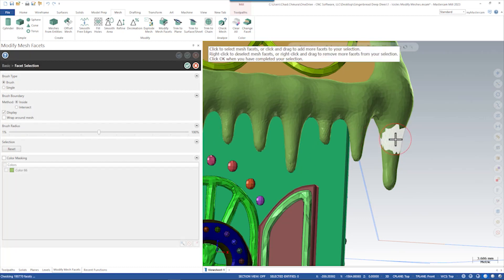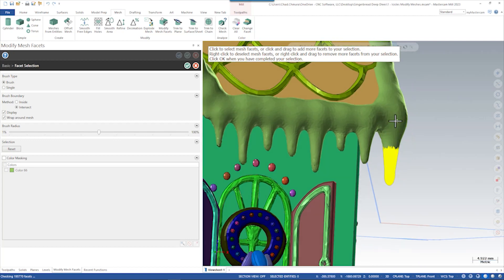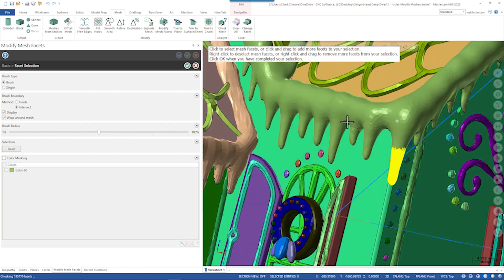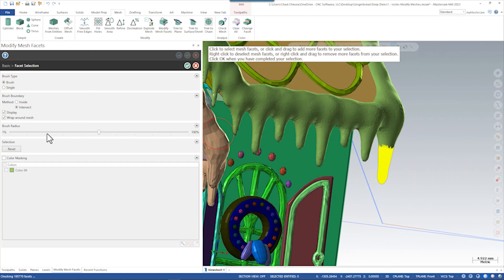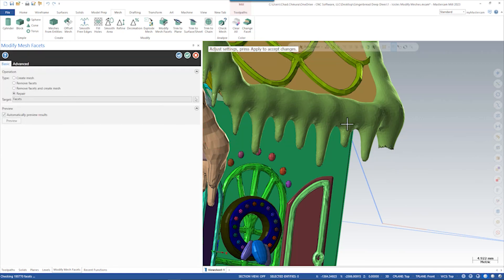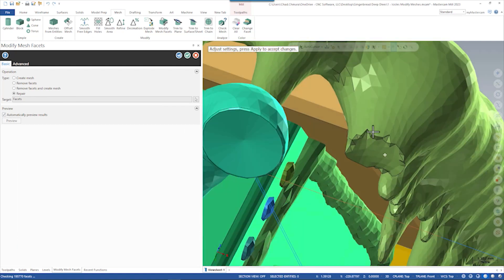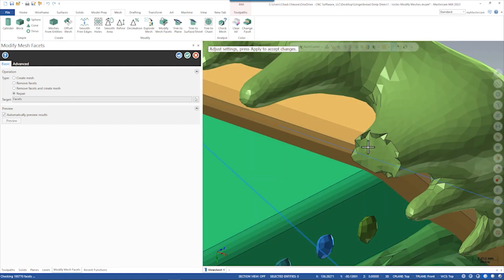With modify mesh facets open, I can change some settings here to force really aggressive selection of facets. You can see I selected just the very bottom tip of that icicle, say okay. Now what the repair option does in modify mesh facets is it will delete those facets and then heal the mesh over it. You can see here it's still a watertight mesh with some new facets, but this is not something that we want to make.